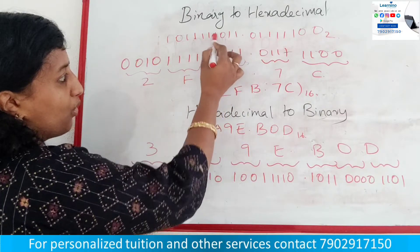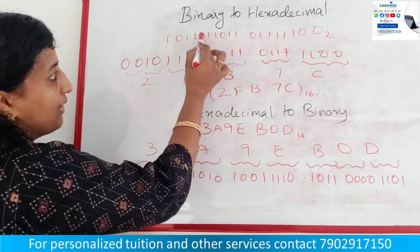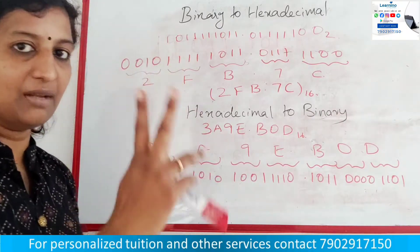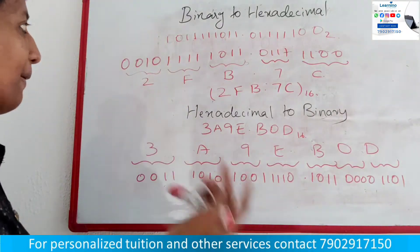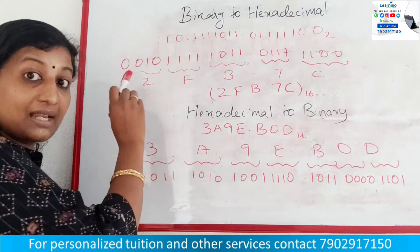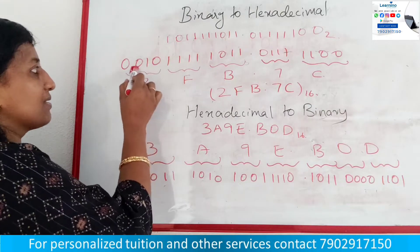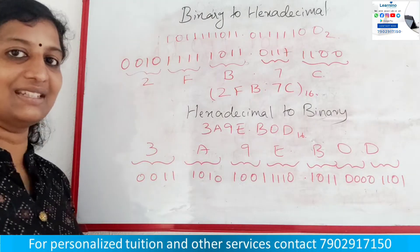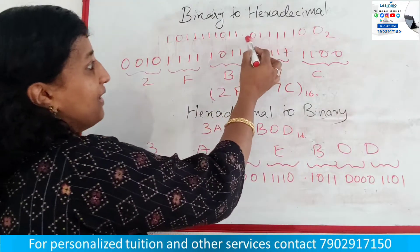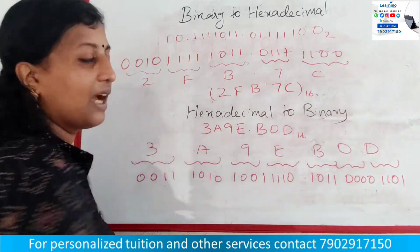The first group is 1, 1, 0, 1. Then the next group is 1, 1, 1. Since there are only 2 bits remaining, we need to pad with zeros to make it a 4-bit group. This is the only way. Now we can find out the corresponding values.